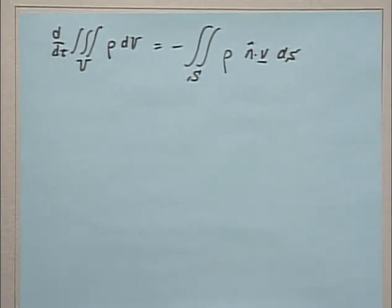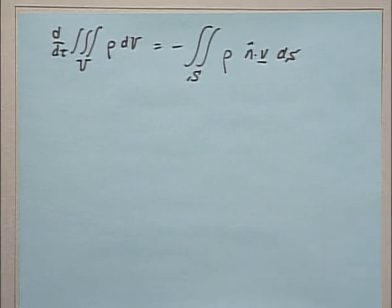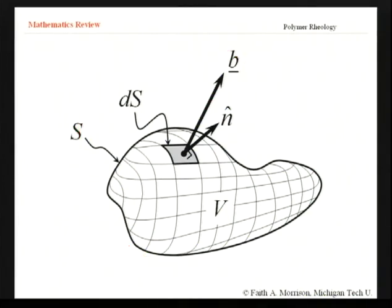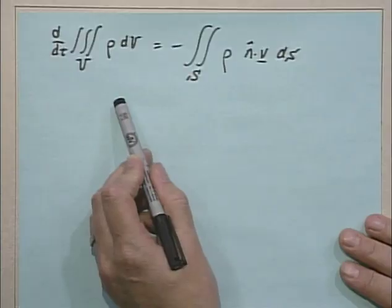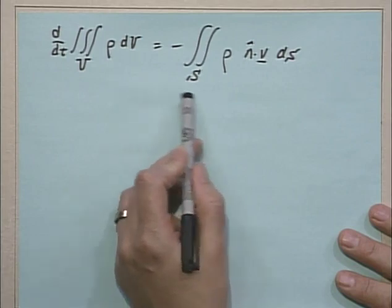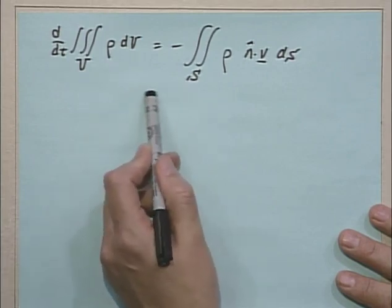We've done all the physics of the derivation — the rest is essentially mathematics. We spent last lecture talking about a couple of rules that will be handy now. What we've written is the balance over an entire volume — an arbitrary volume in space. We want to derive a mass balance over the smallest possible volume: the microscopic mass balance. I'd like to get rid of the integrals, and that's a tricky problem.